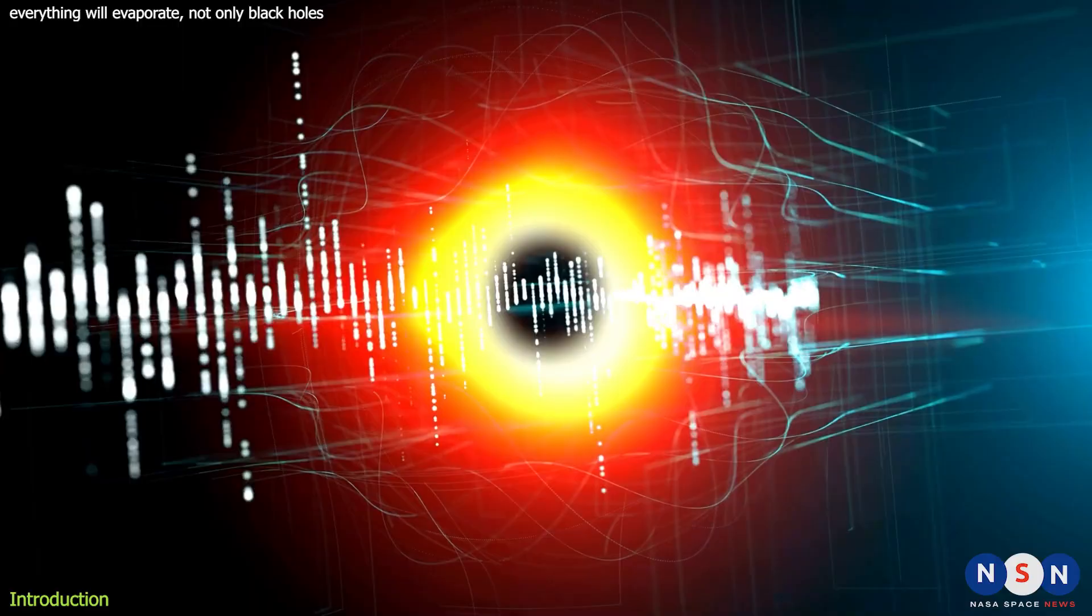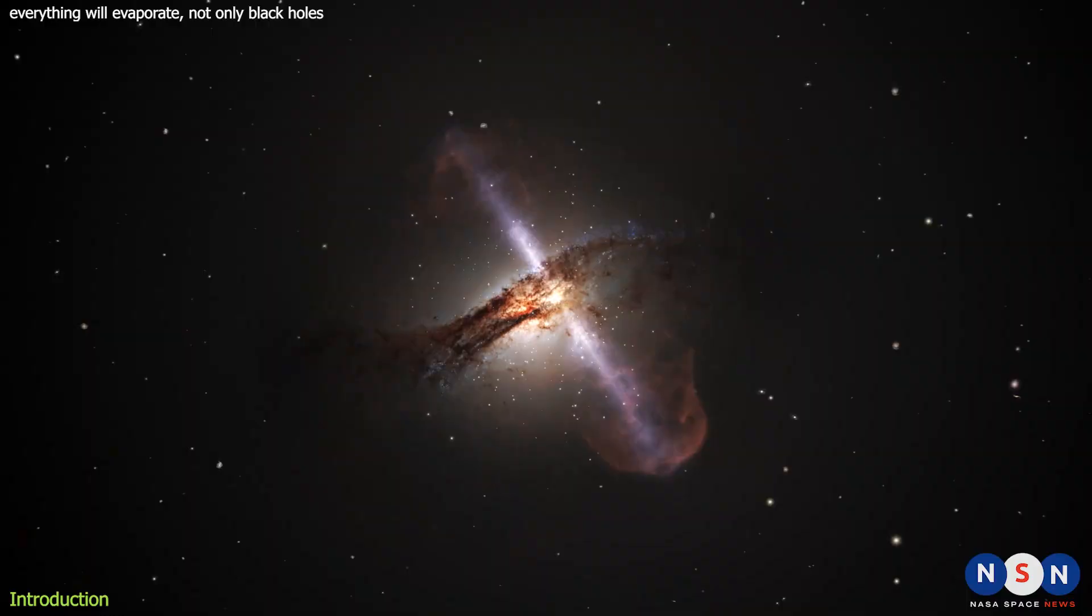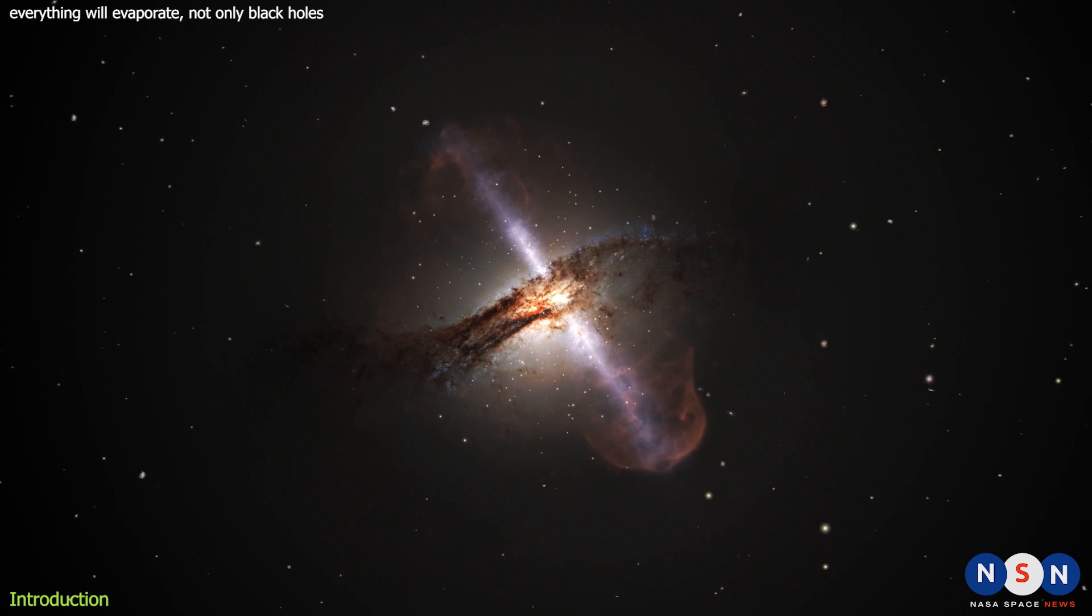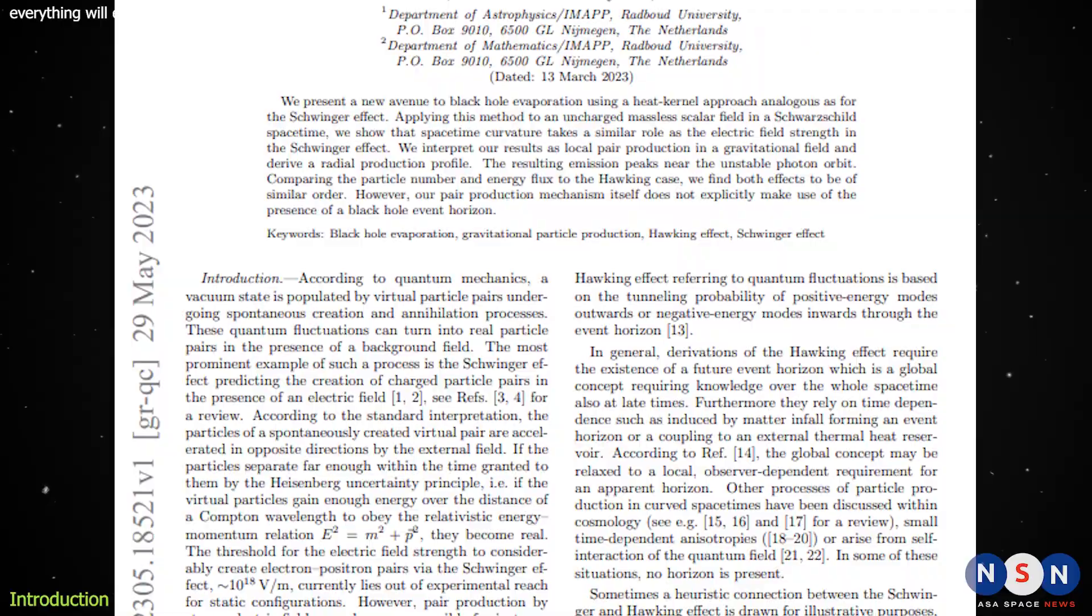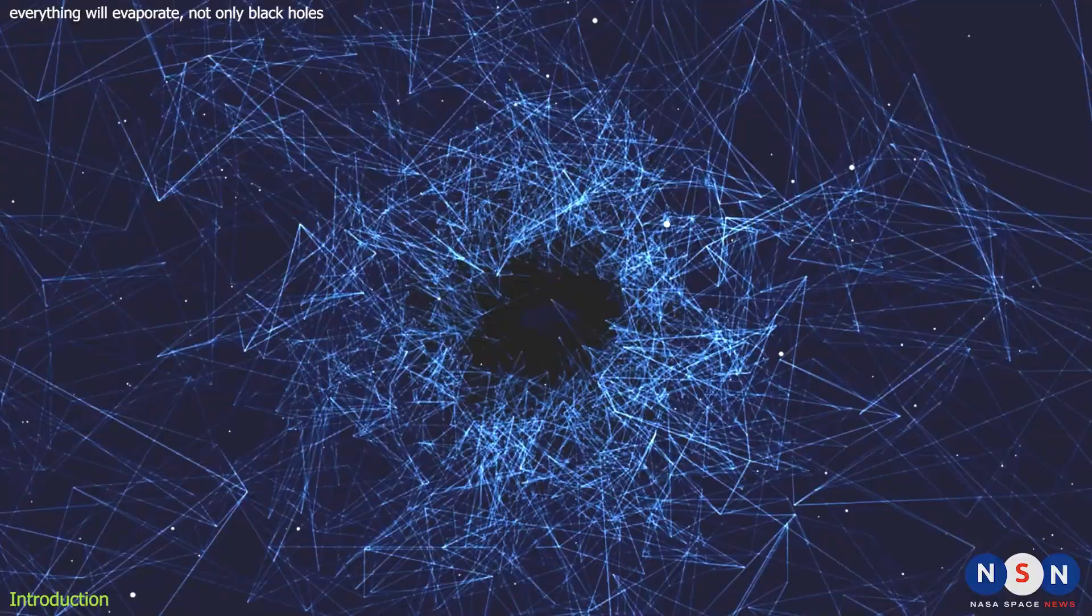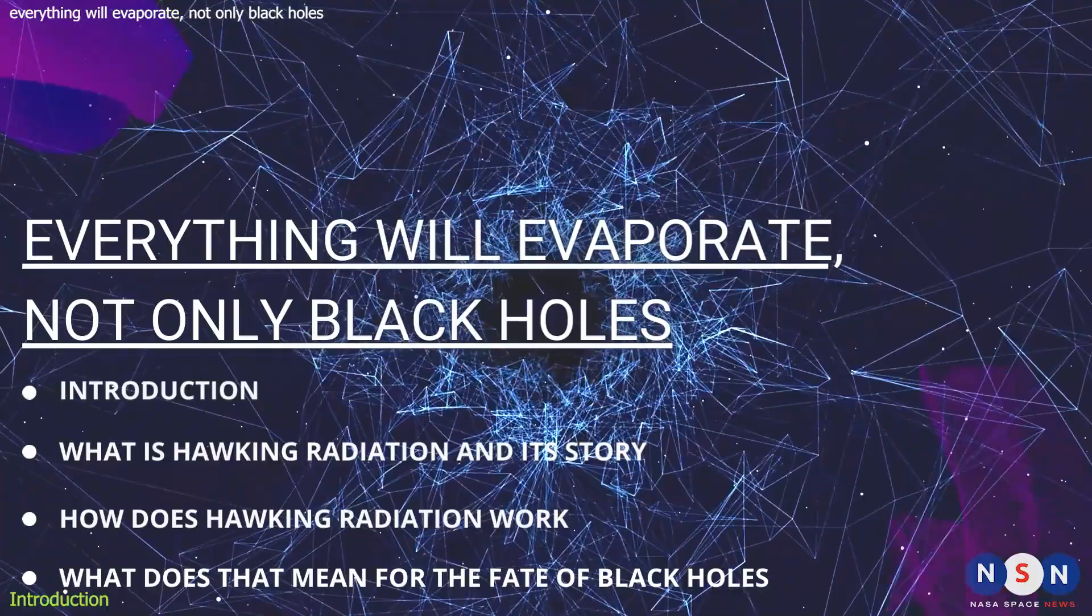What if I told you that this process is not limited to black holes but can happen to any object with mass in the universe? This is what a new study suggests based on a theory called Hawking radiation. In this video, we will explore what Hawking radiation is, how it works, and what it means for the fate of black holes and everything else in our universe.